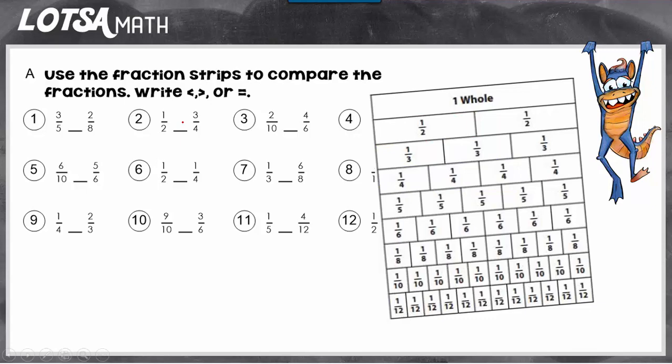Let's look at number three. We have two tenths and four sixths. I'm going to find the tenths and circle two of the tenths, and then I'm going to find the sixths and circle four of the sixths. By looking, I can see that four sixths are greater than two tenths.